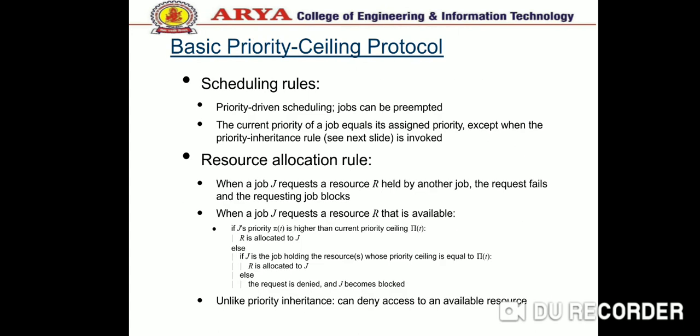Schedulability analysis of the priority ceiling protocol: blocking a higher priority task means it must wait for a lower priority task. A task T_h can be blocked by a lower priority task in three ways. First, the preliminary observation: consider task T with priority π and release time t. Define the ambient priority ceiling π(t) as the highest priority ceiling of all resources allocated at time t.